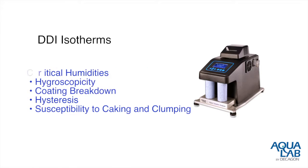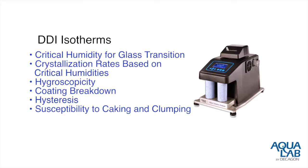With dynamic isotherms or DDI isotherms you can investigate critical humidity for glass transition, crystallization rates based on critical humidities, how hygroscopic a material is, coating breakdown for those materials that have coatings, investigate relative levels of hysteresis, and susceptibility to caking and clumping.